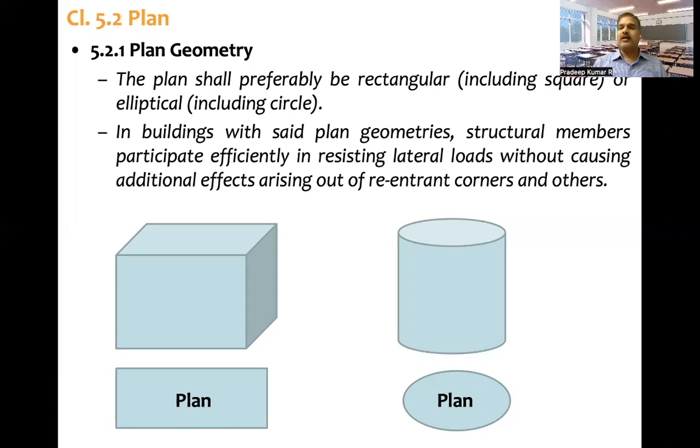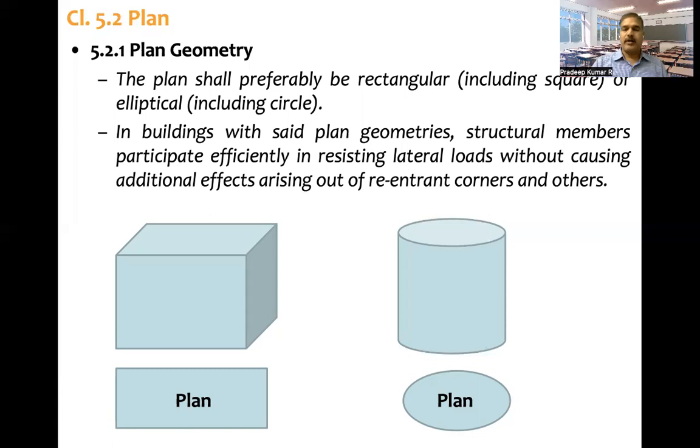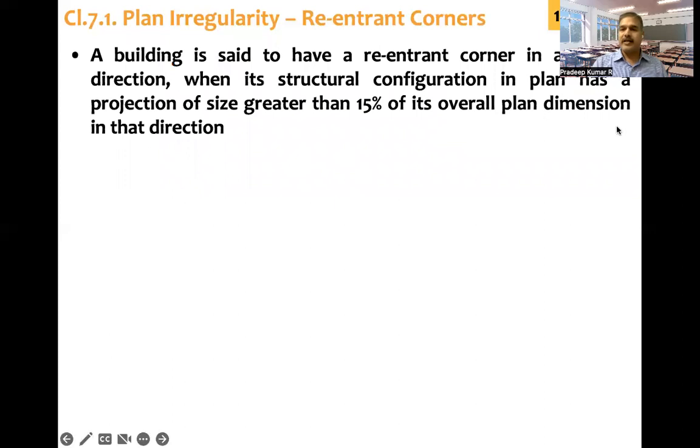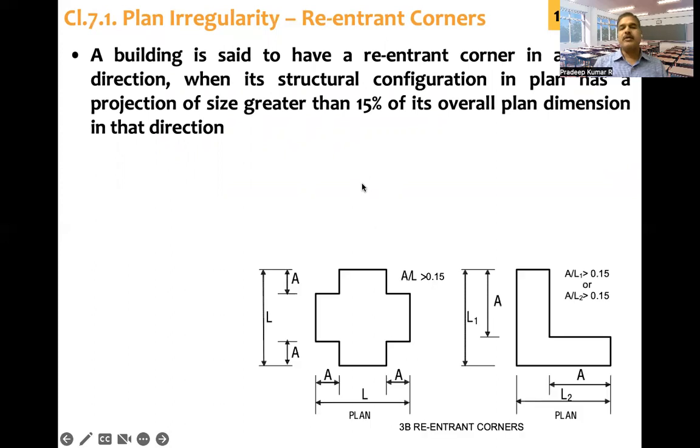Re-entrant corner: A building is said to have a re-entrant corner in any plan direction when its structural configuration in plan has a projection of size greater than 15% of its overall plan dimension. You can see L is a plan dimension and A is a projection. If A by L ratio is more than 15%, then the structure is said to have re-entrant corner.